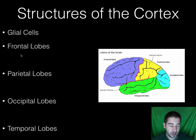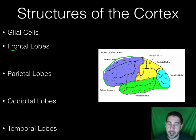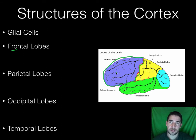Moving on, we're going to look at the four different lobes: frontal, parietal, occipital, and temporal. The frontal lobe is this purple section up here. The frontal lobe is involved in thinking and judgment, and also in speaking and moving your muscles in a coordinated way. This is some higher level processing going on in your frontal lobe.